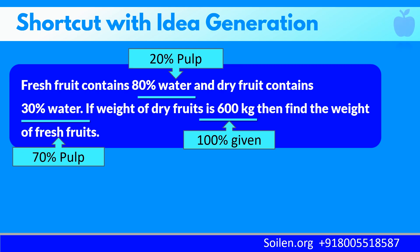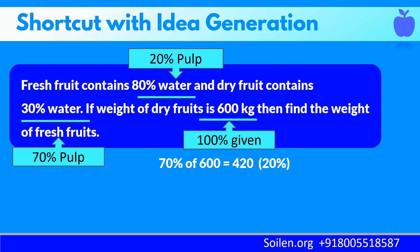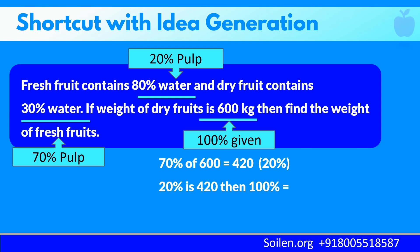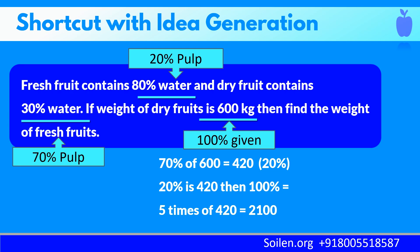First, find 70% of 600. It is the quantity of pulp for both the dry fruits and the fresh fruits. Next, the percentage of pulp in the fresh fruit is 20%, which equals 420 kilograms. We want to find 100%. 5 times 20 is 100, so in the same way we can do 5 times 420, which is 2100. This is the required answer.